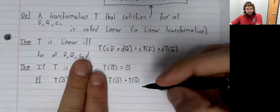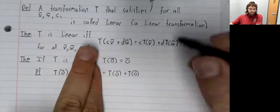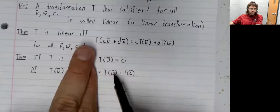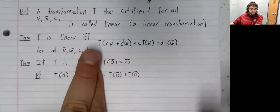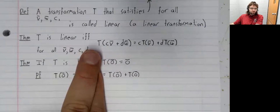So ignoring this middle part, this equals this. Subtract T(0) from both sides, and zero equals T(0).